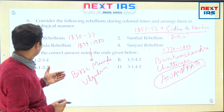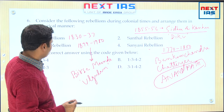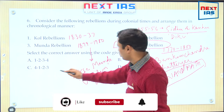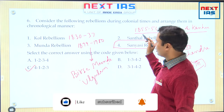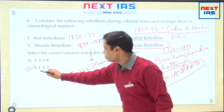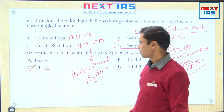So the order of the sequence will be: Sanyasi Rebellion (4) first, then Kol Rebellion (1), then Santhal (2), then Munda (3) — making the correct order 4, 1, 2, 3, and the answer is C.